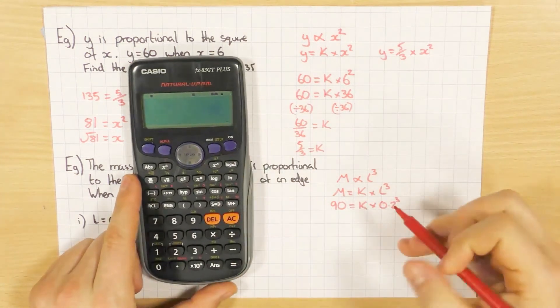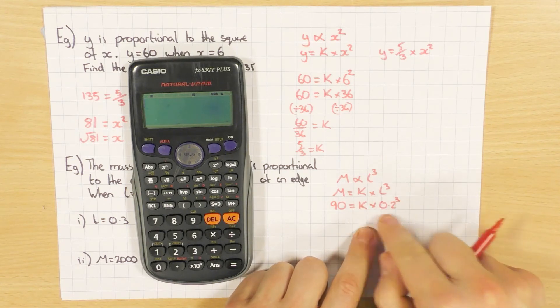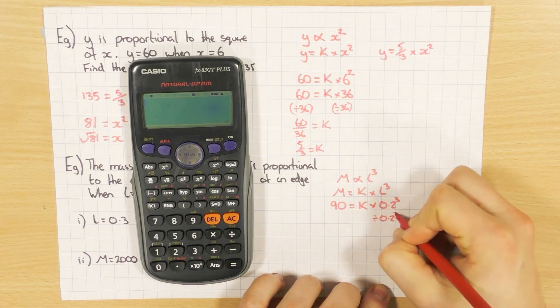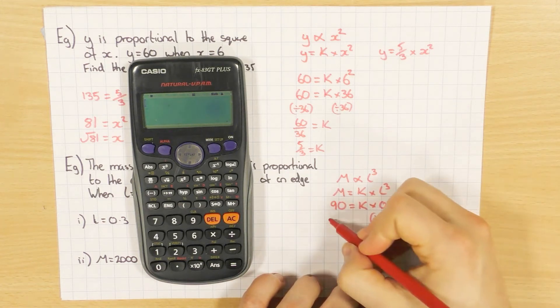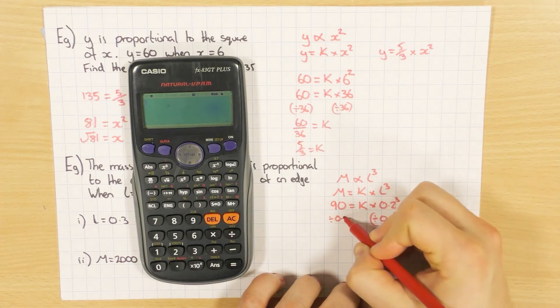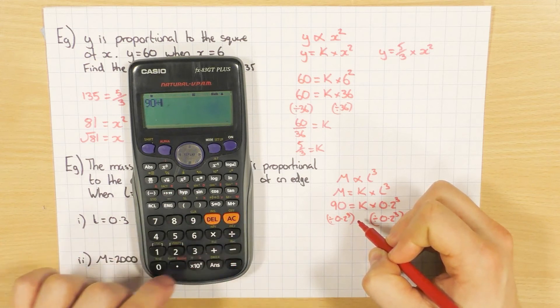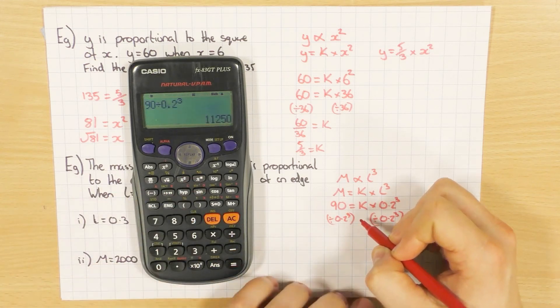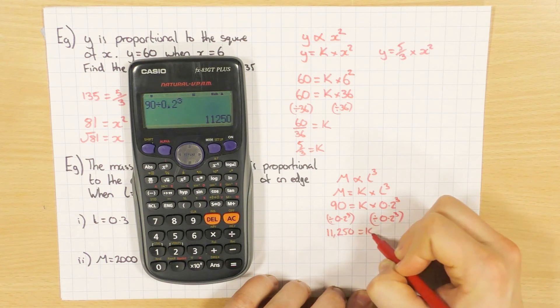So I'm going to use my calculator here again. Because I'm going to divide, at the minute I'm doing 0.2 cubed times k. So I'm going to divide both sides by 0.2 cubed. You can obviously work out what 0.2 cubed is and then divide by it. But let's just save that work. So 90 divided by 0.2 cubed. And that is 11,250. And that's what k equals.